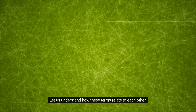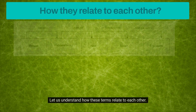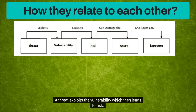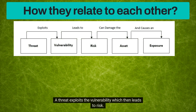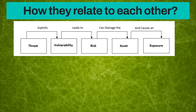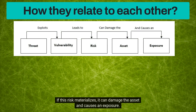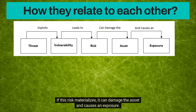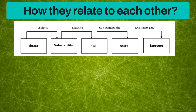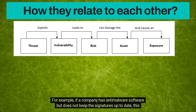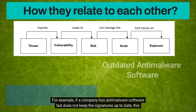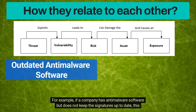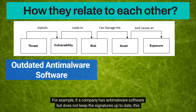Let us understand how these terms relate to each other. A threat exploits the vulnerability, which then leads to risk. If this risk materializes, it can damage the asset and causes an exposure. For example, if a company has anti-malware software but does not keep the signatures up to date, this is a vulnerability.